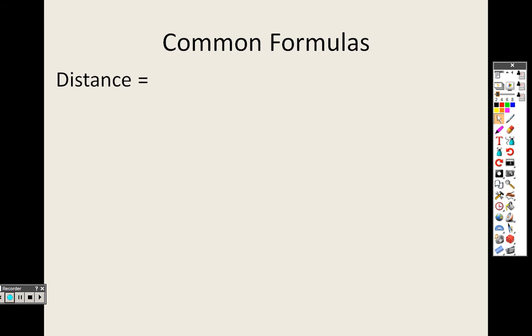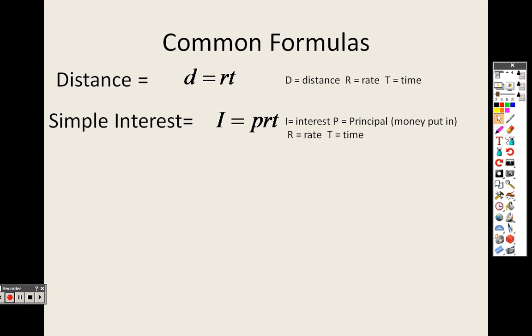Common formulas. Distance. You need to know the distance formula. That's D equals RT, where D stands for distance, R stands for rate, and T stands for time. You need to know simple interest formulas. I equals PRT. I stands for interest. P stands for principal, the amount of money you put in. R stands for rate. And T stands for time.